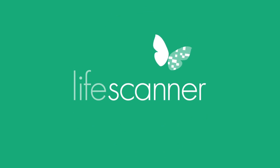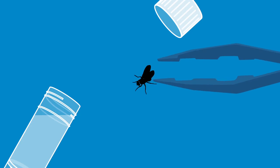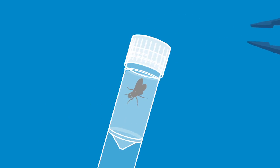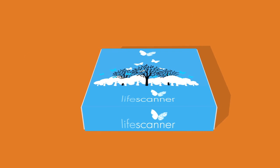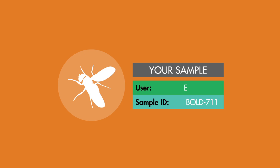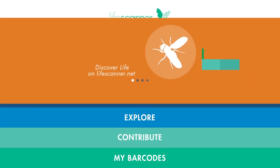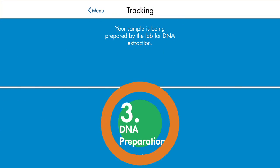LifeScanner uses a method called DNA barcoding to analyze a small piece of tissue from a specimen, isolating a short segment of its genome to identify it. Simply collect a specimen with our collection kit, use the LifeScanner app to record important information about it, and send the completed kit to us. When your specimen arrives at one of our partner labs, it is given a unique ID number and linked to you. You can then use the LifeScanner app to track its journey through the DNA barcoding identification process.